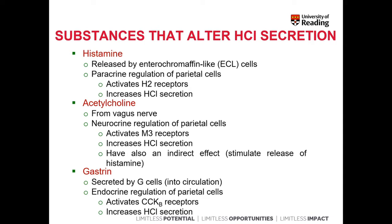Acetylcholine, which mostly comes from parasympathetic neurons of the vagal nerve, carries out the neurocrine regulation of parietal cells. The parasympathetic nervous system activates parietal cells directly by activating muscarinic 3 receptors, which are metabotropic receptors for acetylcholine, leading to increased hydrochloric acid secretion, but also has an indirect effect by stimulating the release of histamine from enterochromaffin-like cells. So acetylcholine acts both directly on parietal cells via M3 receptors, and indirectly by stimulating ECL cells, which release histamine that paracrinely activates H2 receptors on parietal cells.